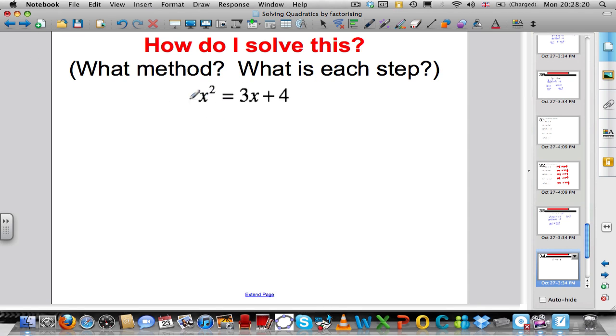Have a look here. I've got a quadratic, x squared. It's equal to 3x plus 4. I want to make the right-hand side or any of the sides equal to 0 so I can factorise. So, I'm going to subtract 3x off both sides.